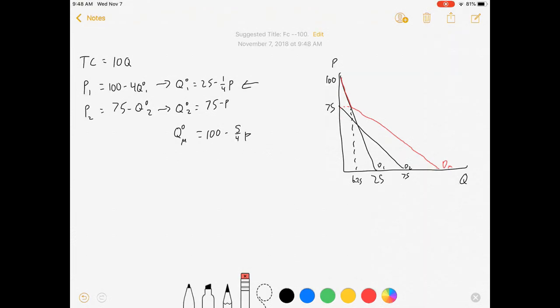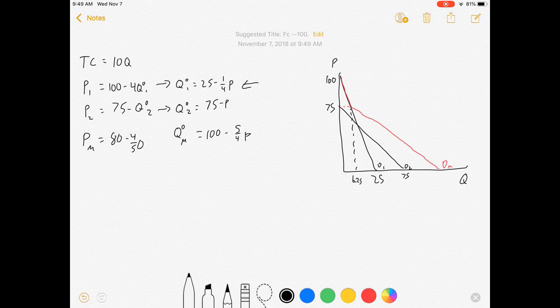Now, we want to invert that to make it an inverse demand function, and that's going to come out to P for the market is equal to 80 minus four-fifths Q. There's our two equations we can work with.